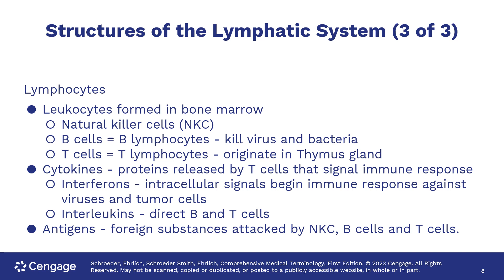Lymphocytes are white blood cells formed in the bone marrow. Types of leukocytes are natural killer cells, B and T cells. Cytokines are proteins that signal an immune response. The types of cytokines are interferons, which start the immune response against cancers or infection, or interleukins that tell B and T cells what to do.